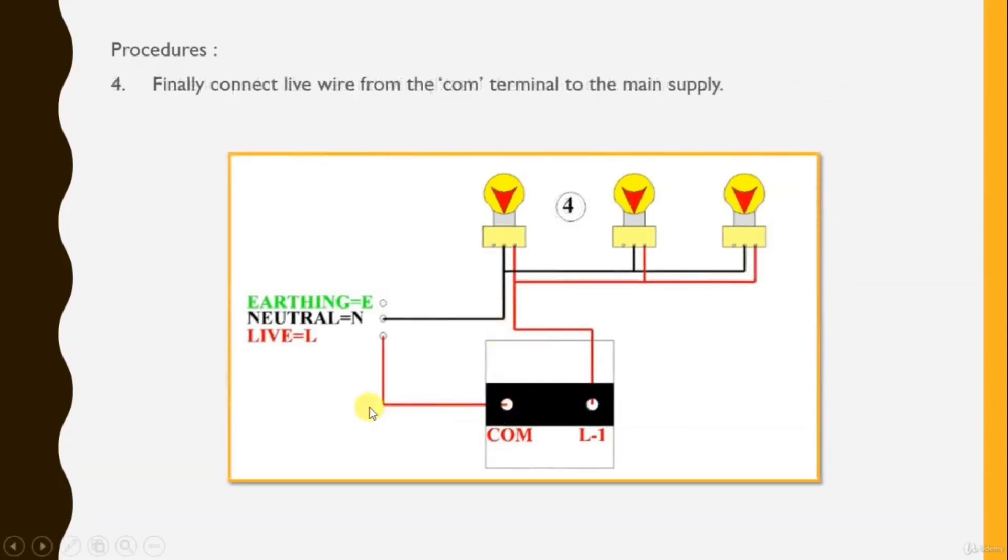Finally, connect the live wire from the com terminal to the main supply. So in this case, the three lights will turn on and off at the same time. And don't forget to follow this strategy in wiring.